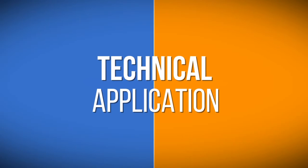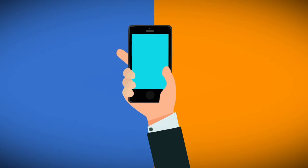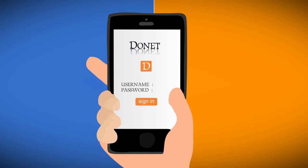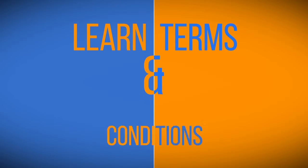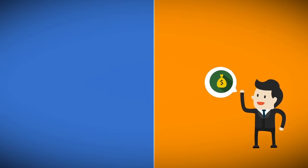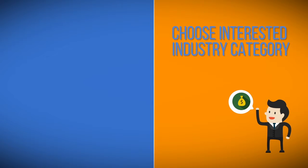Regarding the technical application: first, the idea owner and investor download the Donate application from the Play Store. Next, they sign up by filling in their identity and agreeing to the terms and conditions. The next step for the investor is to choose the industry or business categories they are interested in.